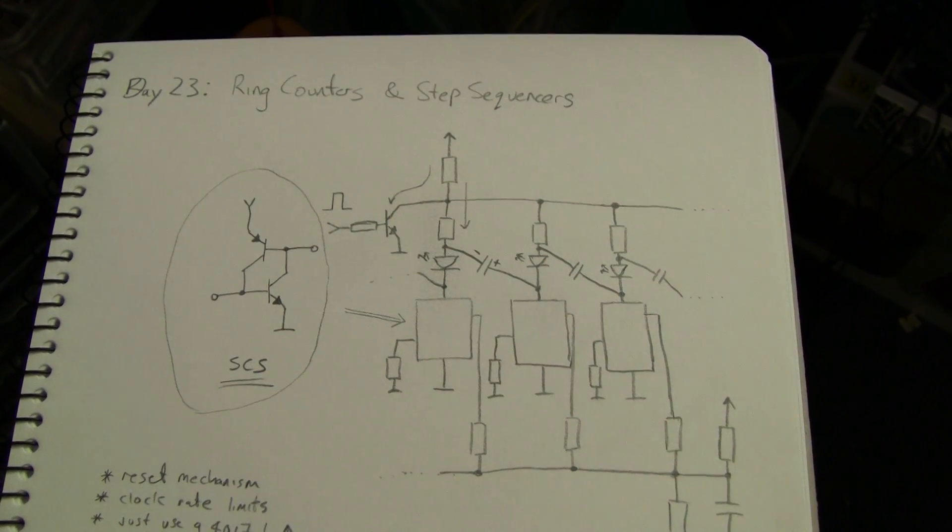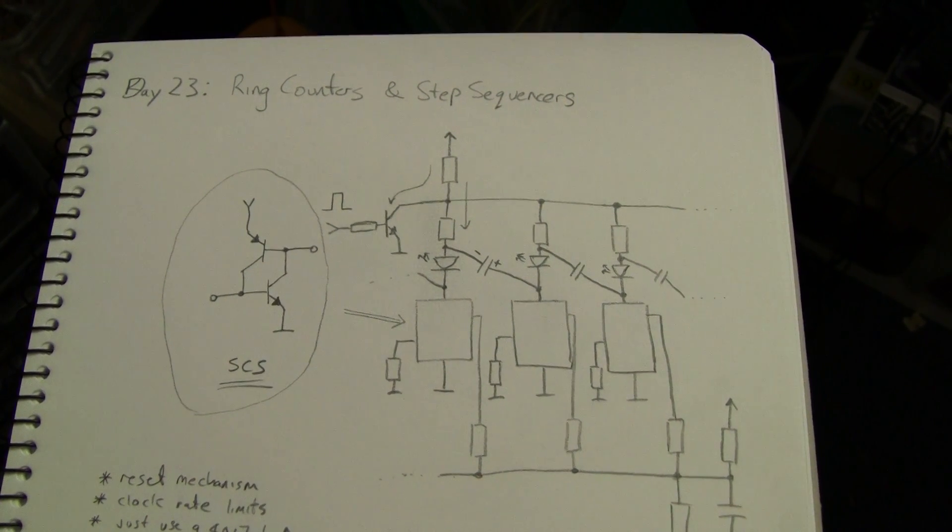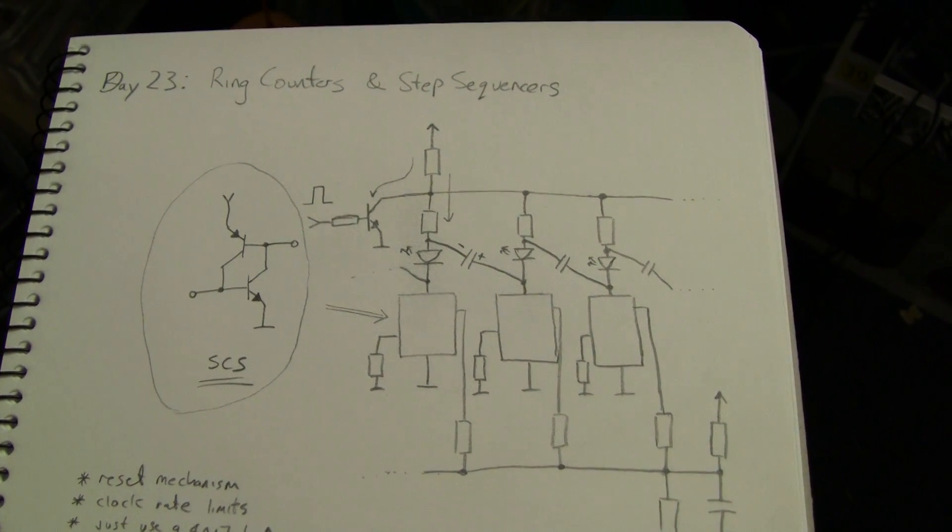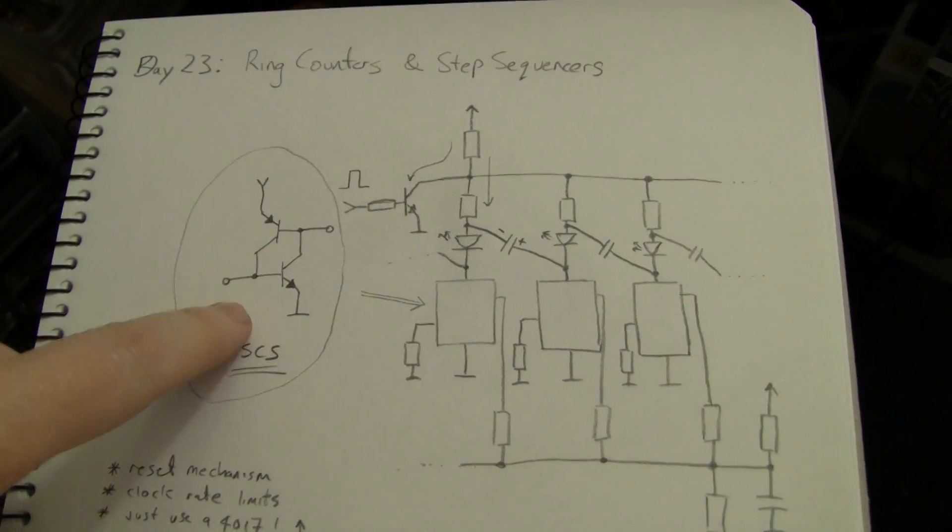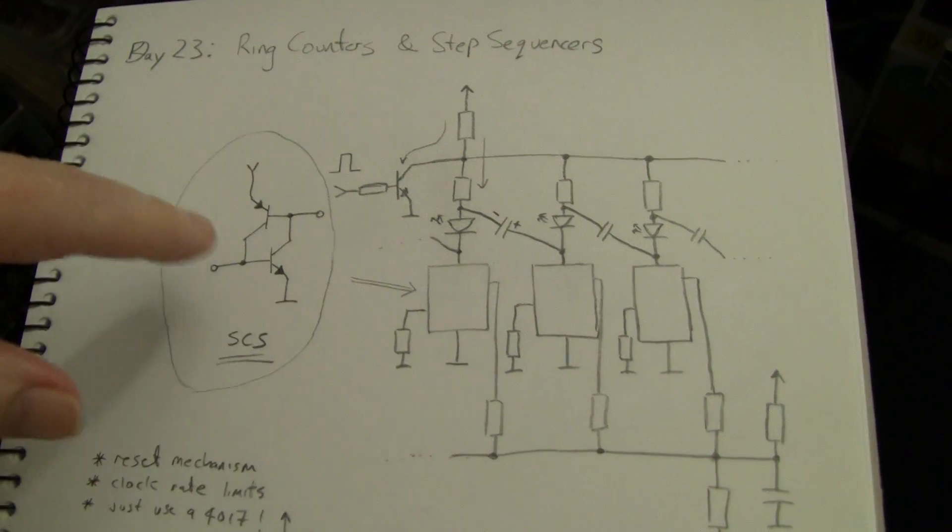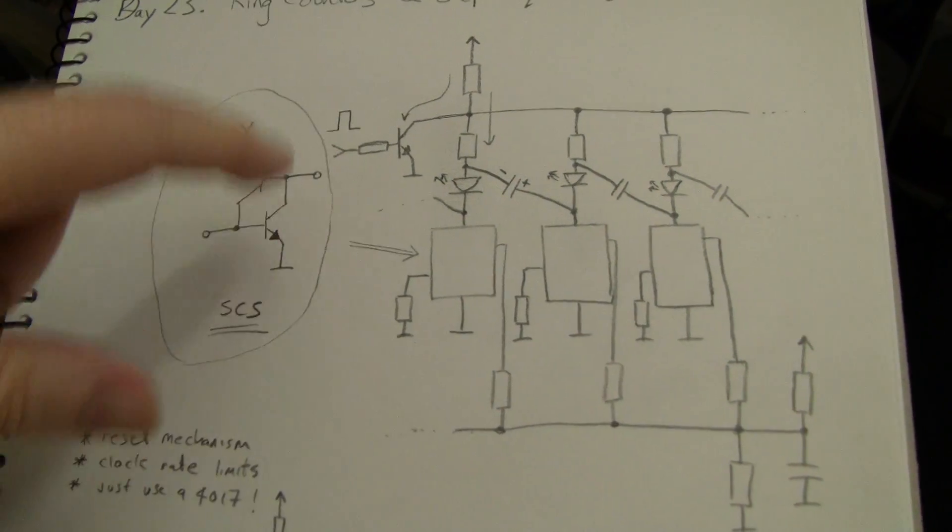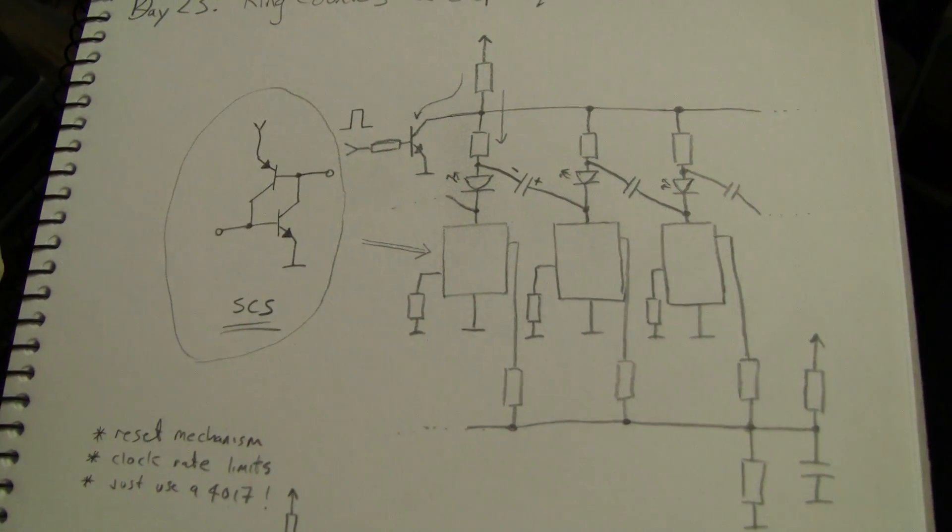G'day everyone, day 23, ring counters and step sequences using the SCS or the four layer diode or the complementary pair that we've seen in so many of these circuits in this series. It's one of my favorite variations, all the different variations you can have with these two transistors is one of my favorite circuits.